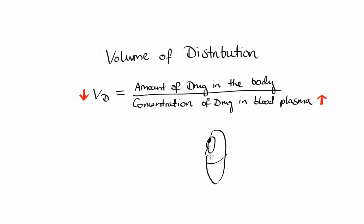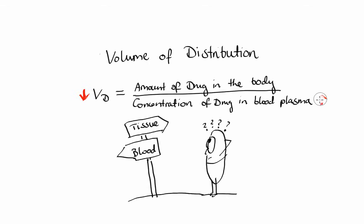The bottom line is volume of distribution helps predict whether the drug will concentrate largely in the blood or in the tissue. This is really helpful in estimating drug dosing. For example, if drug has larger volume of distribution, we would need to administer a larger dose to achieve desired concentration.